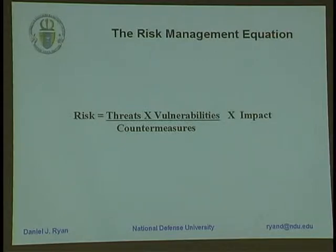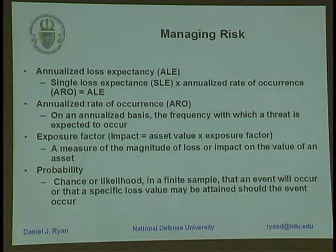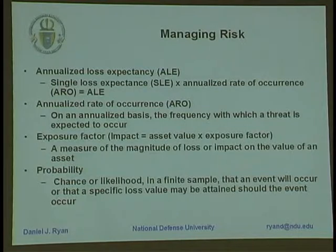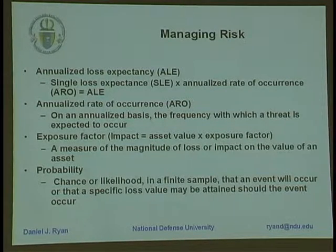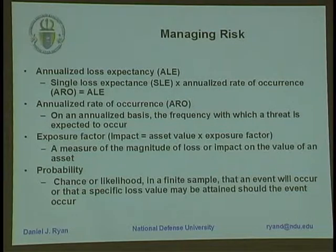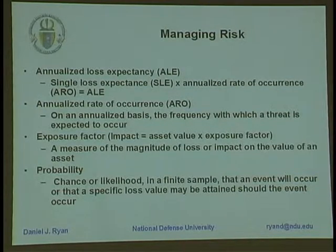We never claimed that this was really anything more than just a way of thinking about things. We didn't say there were numbers you could plug into these values to come up with some numeric assessment of risk. It was just a way of thinking about things. So we turned to the way people were proposing to numerically address risk, and we found things like annualized loss expectancy, which they said was the product of single loss expectancy and something called the annualized rate of occurrence. You'll find these in NIST documents to CISSP exam guides. They talked about exposure factors — what we called impact — and the probability being the likelihood that such an attack would be successful.